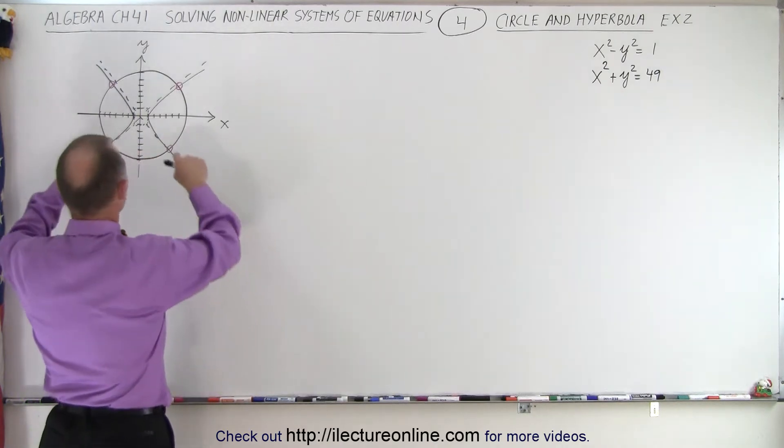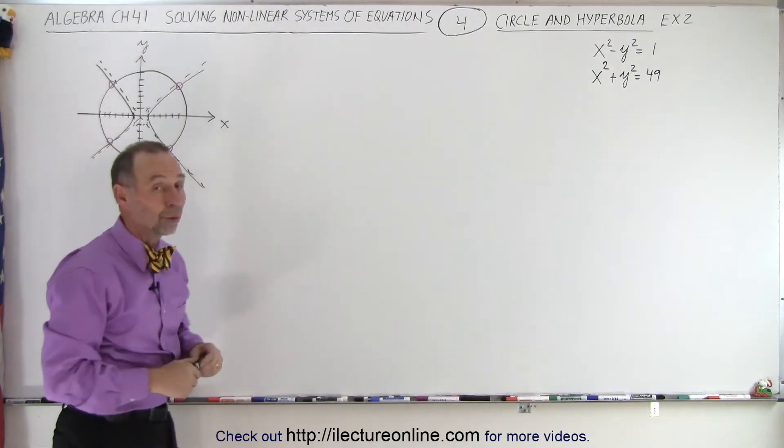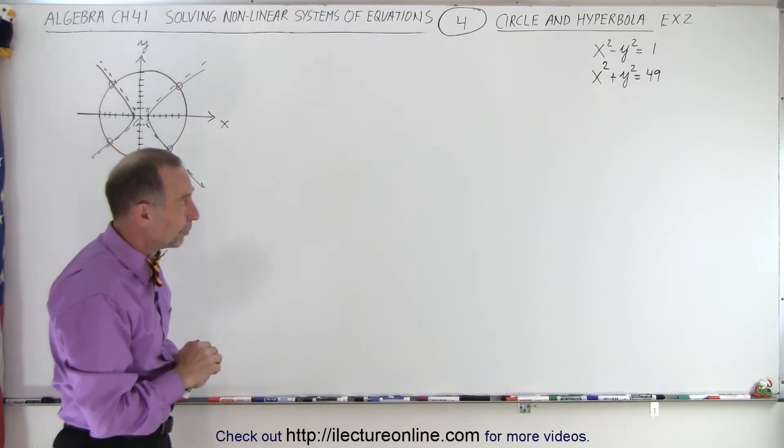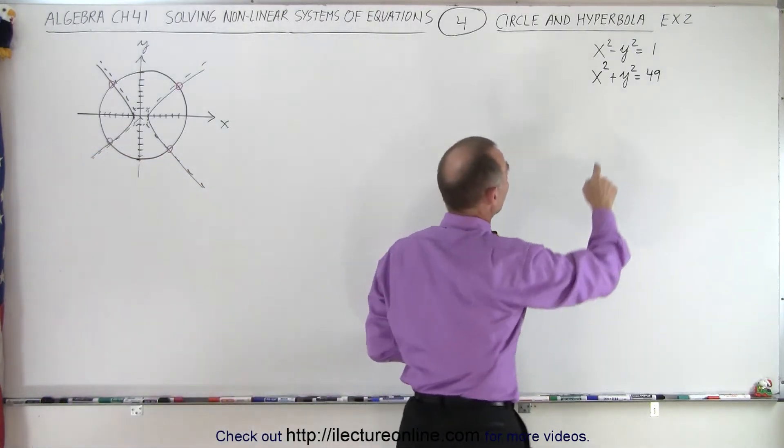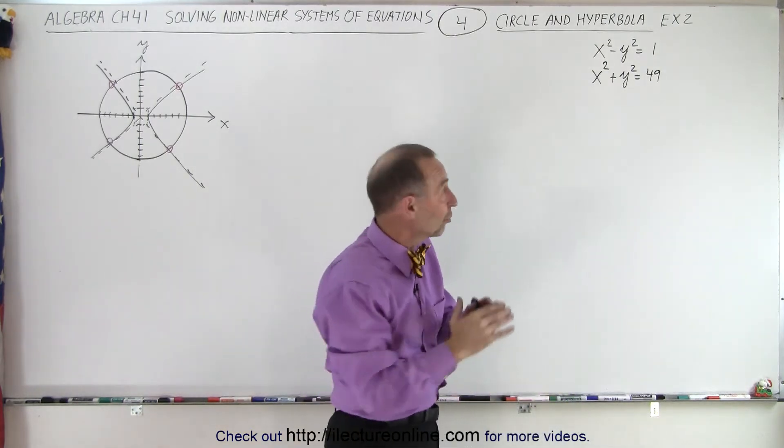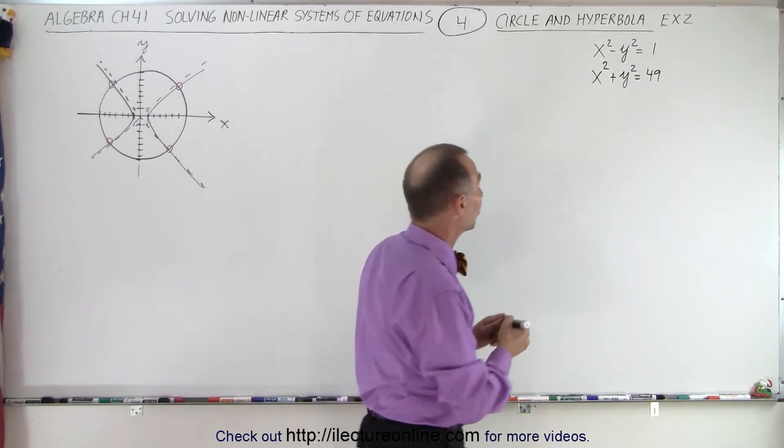And now you can see that there's four locations where the two equations will cross. So we're looking for four solutions. So how do we deal with this? Well, first of all, notice that we have a minus y squared up here and a plus y squared, which means if we add the two equations, we can easily eliminate y and then we can solve for x. So let's do that.